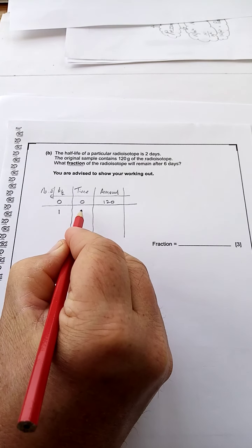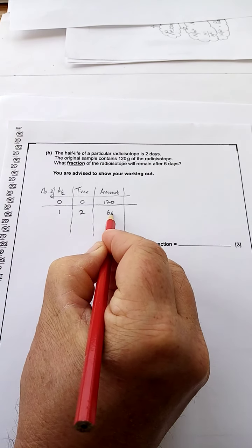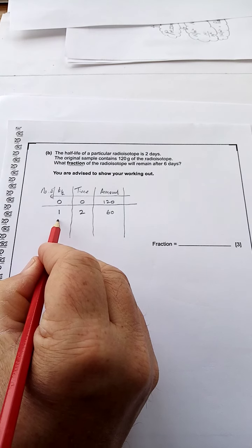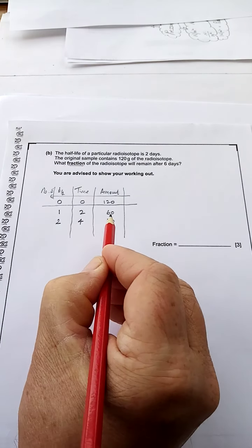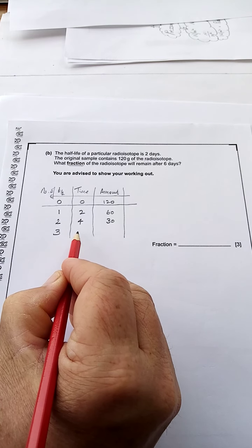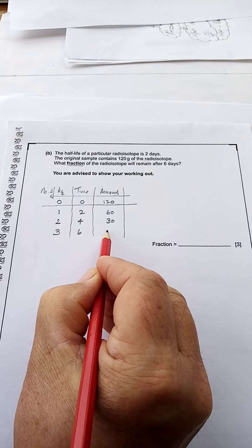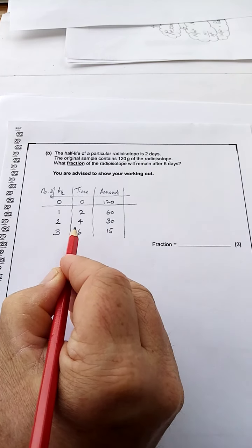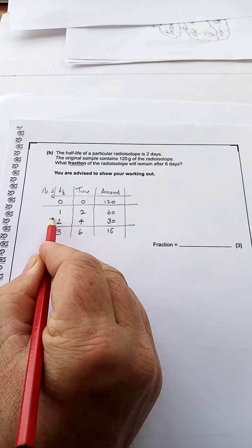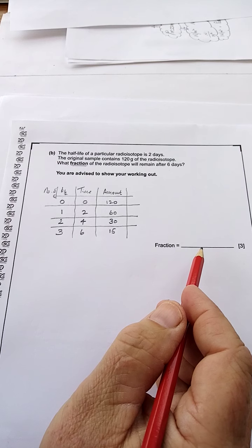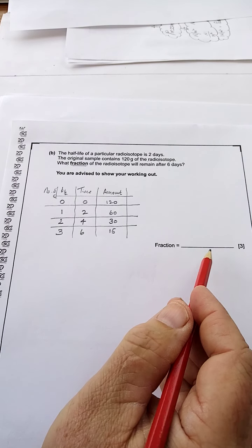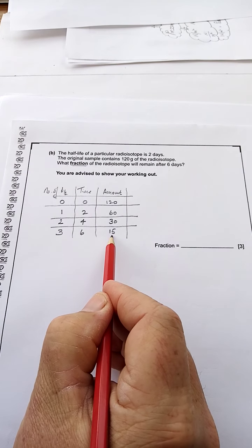So at no half-lives in no time, there's 120 grams. In one half-life or two days, there's 60 grams. In two half-lives or four days, there's 30 grams. In three half-lives or six days, there is 15 grams. Now, but that's not the answer. So if you write down 15 grams here, you get the solution is wrong, even though the answer which you may think is right.